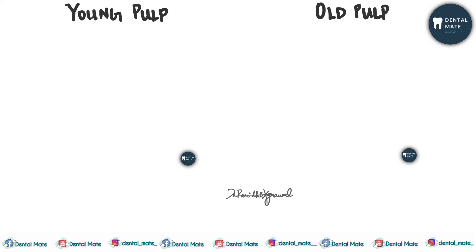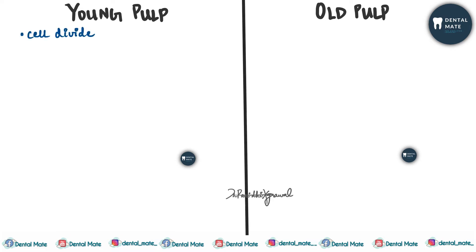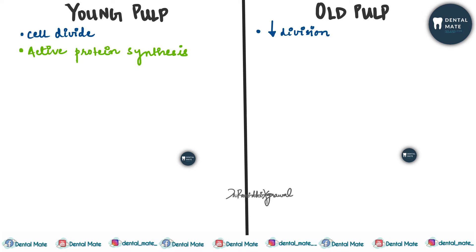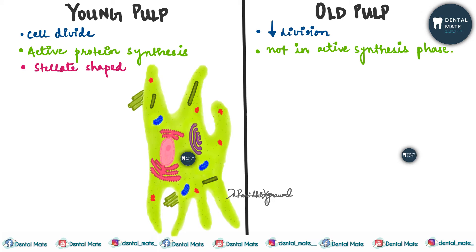In young pulp the cell divides continuously, whereas there is less division in the old pulp. In younger pulp they are active in protein synthesis, whereas in older pulp they are not in an active synthesis phase.